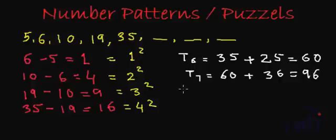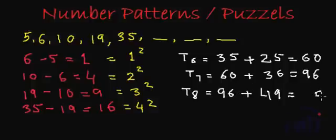And the eighth term, that is T8, will be 96, which is T7, plus square of 7. 7 squared is 49. So if we add 96 and 49, we will get 9 plus 6 is 15, 1 carry over, 1 plus 9 is 10, plus 4 is 14. So the eighth term will be 145.